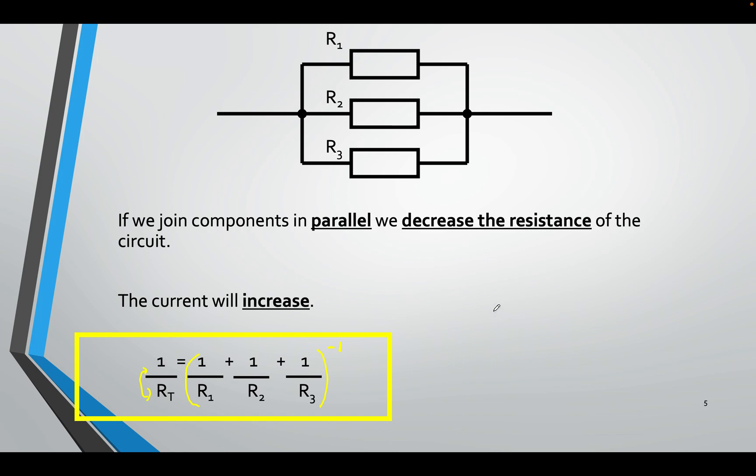You just put 1 over this, 1 over this, 1 over this. Let's say this was 10, and this was 10, and this was 10. You will literally do 1 over 10 plus 1 over 10 plus 1 over 10 to the power of minus 1, and you will get your answer.